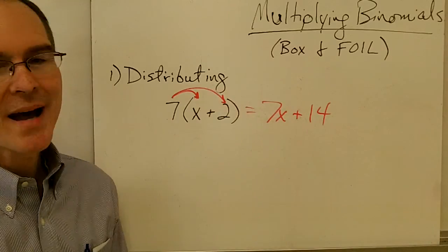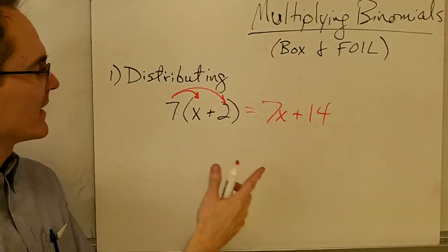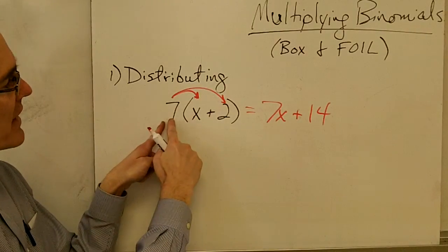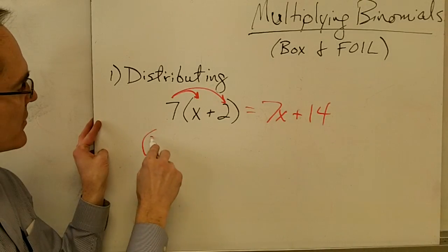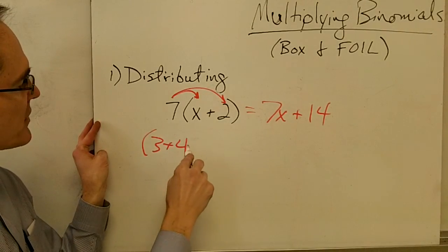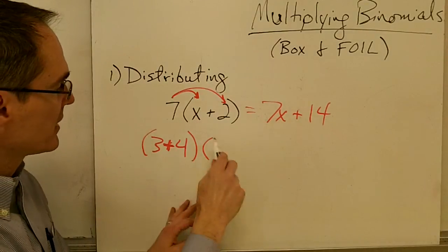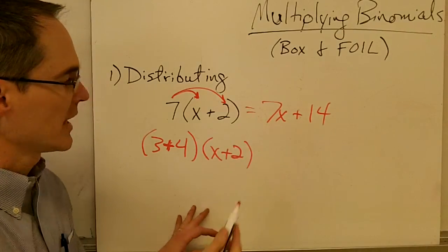Well, when you're multiplying binomials, you're still using the distributive property, you're just using it in a slightly different form. So I could rewrite this expression, instead of writing it as 7 times x plus 2, I could write it as, if I write 7 as 3 plus 4, then I could write this as 3 plus 4 times x plus 2.